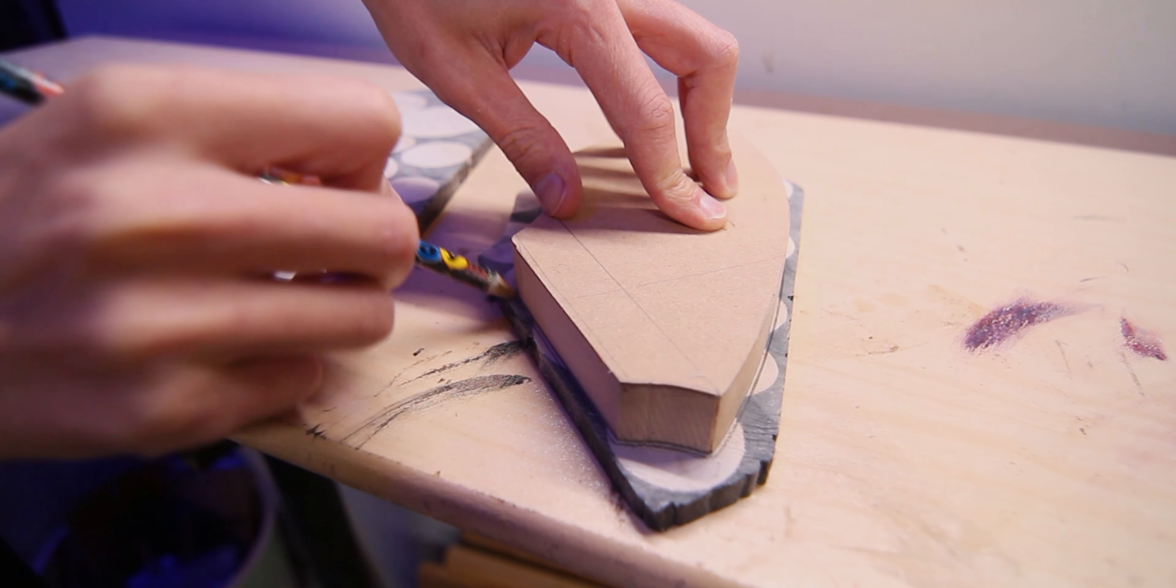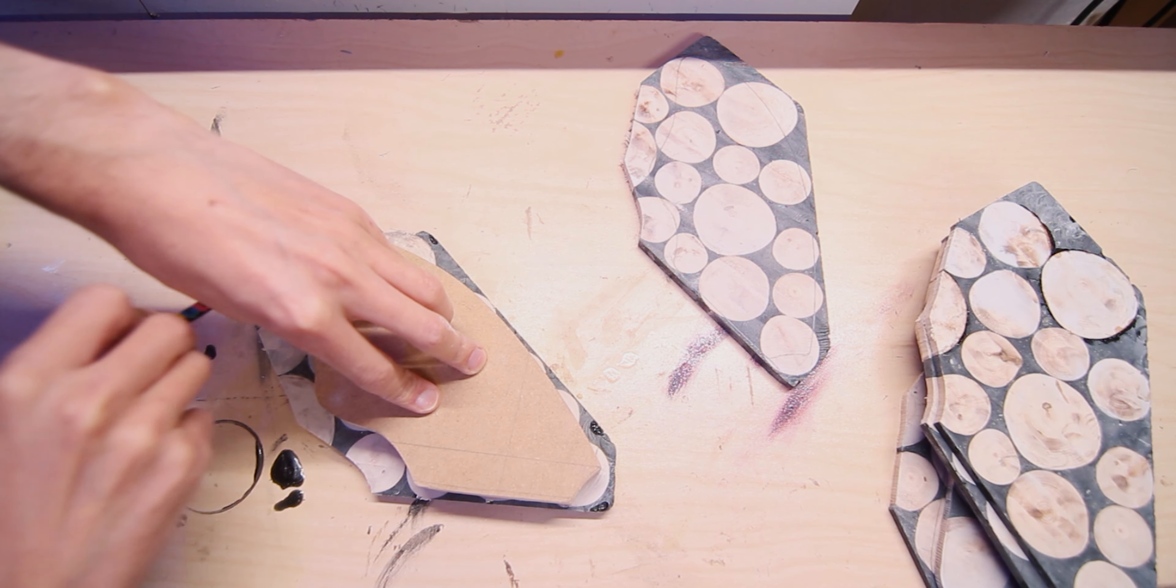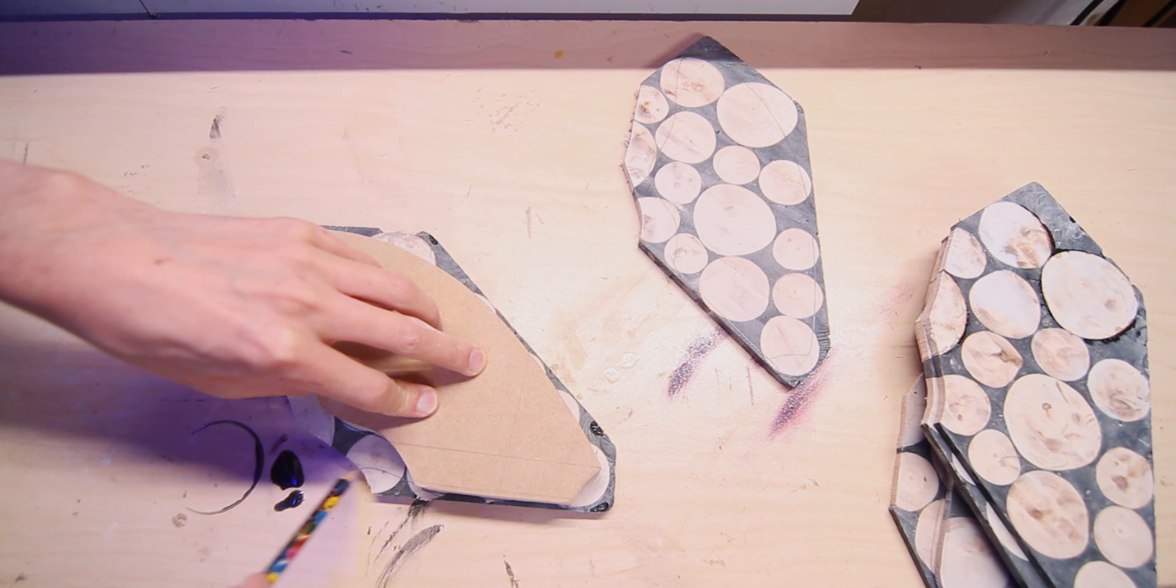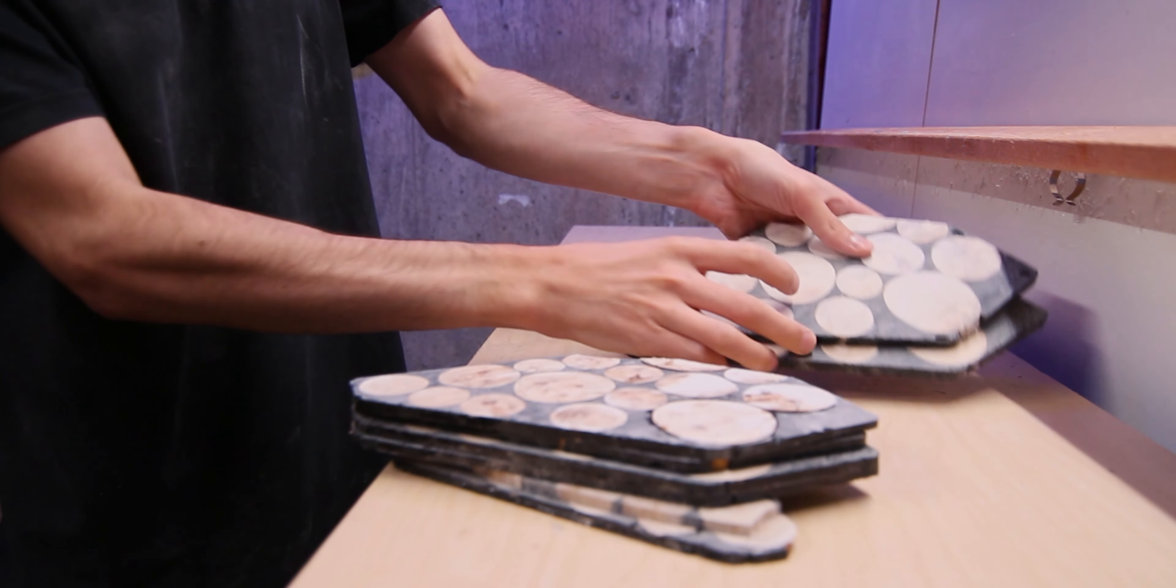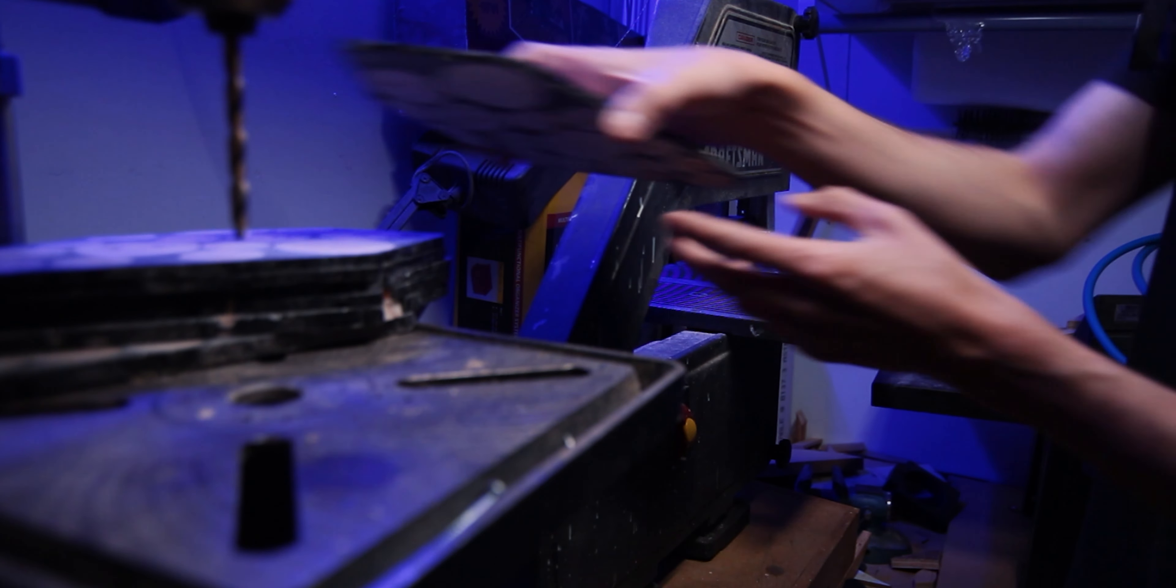Once I've done one pass on all the panels, I'm going to flip them over and put the flat sides down and match two panels up together and repeat the process. This will ensure that I have two panels that are the same thickness and perfectly flat on both sides.